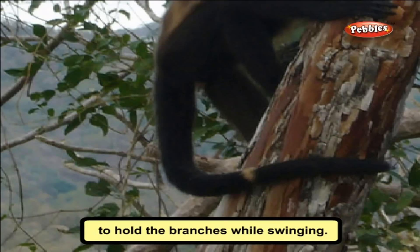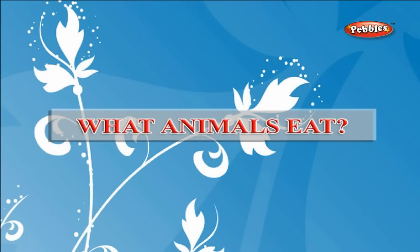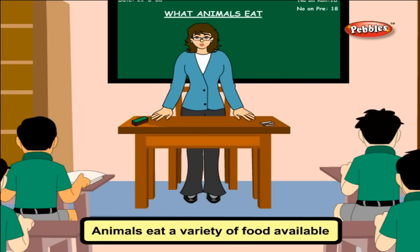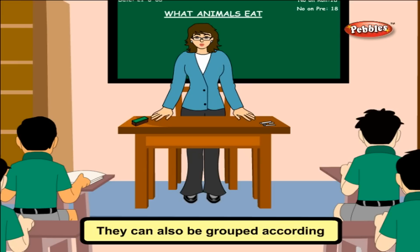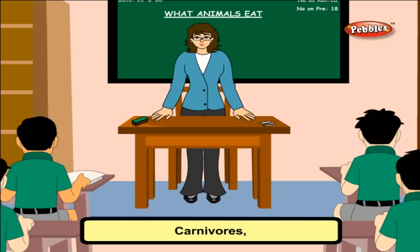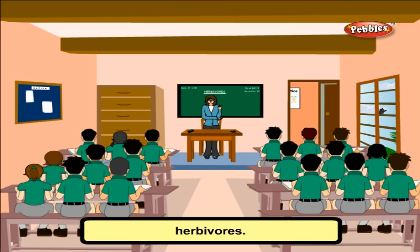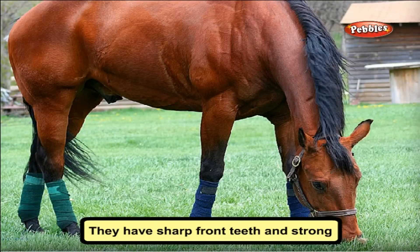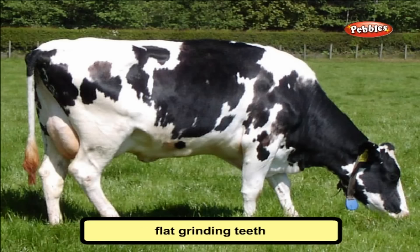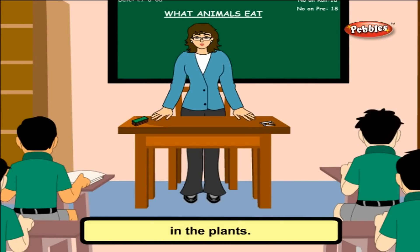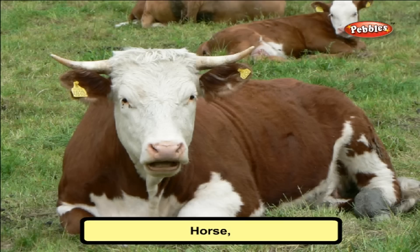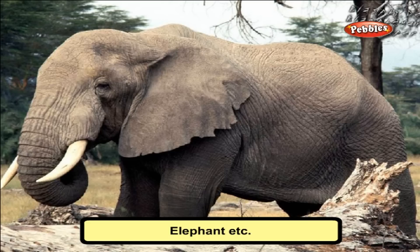Animals eat a variety of food available in their environment. They eat plants or other animals and can be grouped according to their food habits: herbivores, carnivores, omnivores, scavengers, and parasites. Plant-eating animals are called herbivores. They have sharp front teeth and strong flat grinding teeth. They can digest the cellulose present in plants. Examples: horse, cow, sheep, camel, elephant, etc.